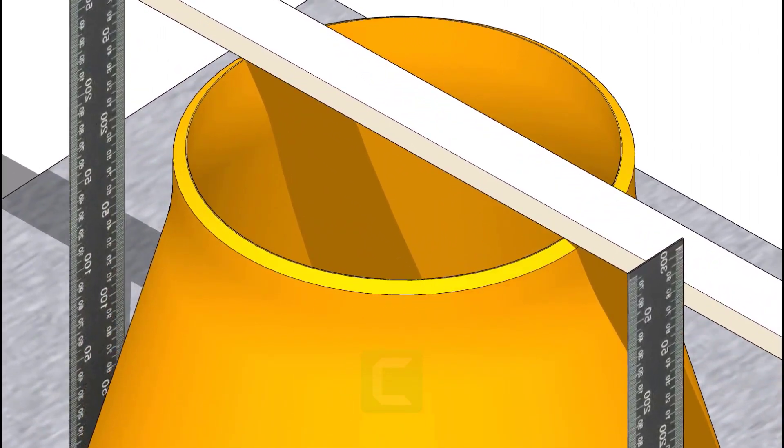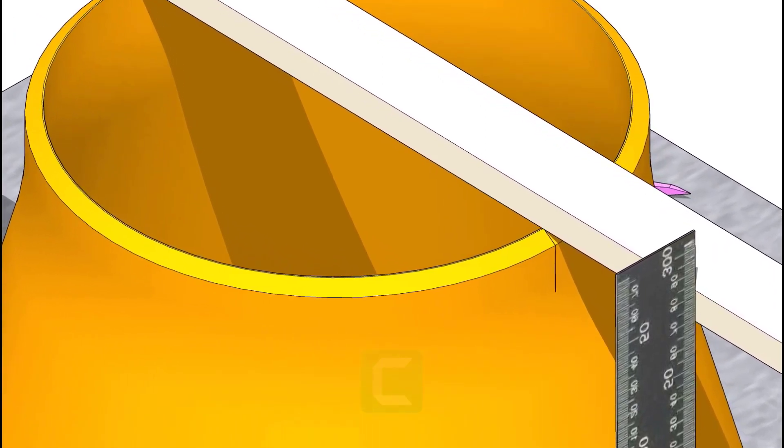Mark where the box touches the reducer edge on both sides. Extend the mark to the sides of the reducer.